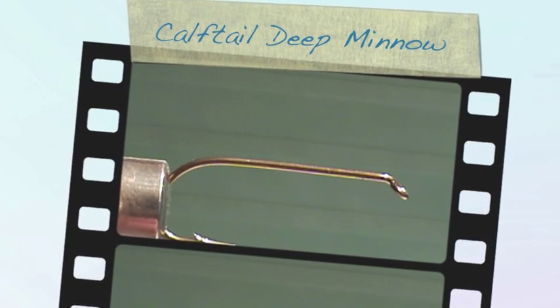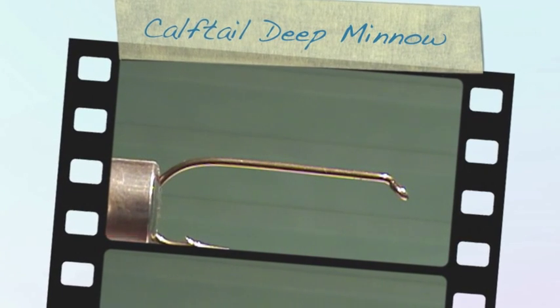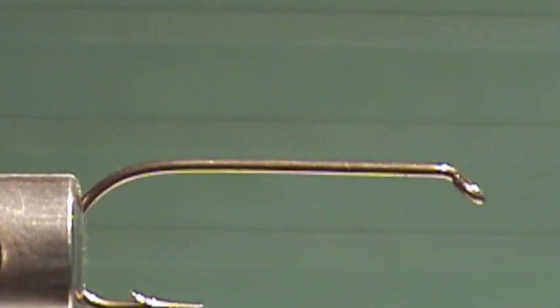We're going to tie a deep minnow. This is a great pattern for trout or salmon. It's a pattern that gets down deep. You can tie it in all different sizes, all different colors. Works well in fresh water, salt water, whatever.